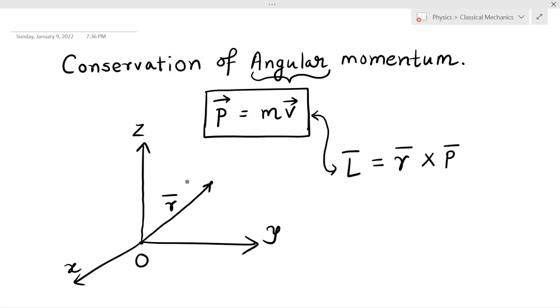So this is L̄ = r̄ × P̄, the definition of angular momentum.